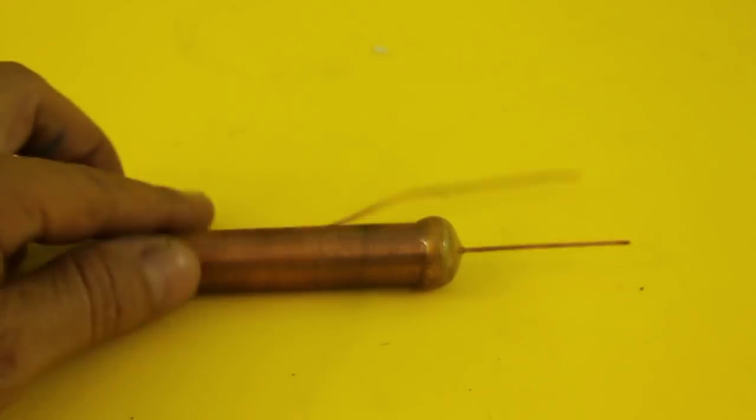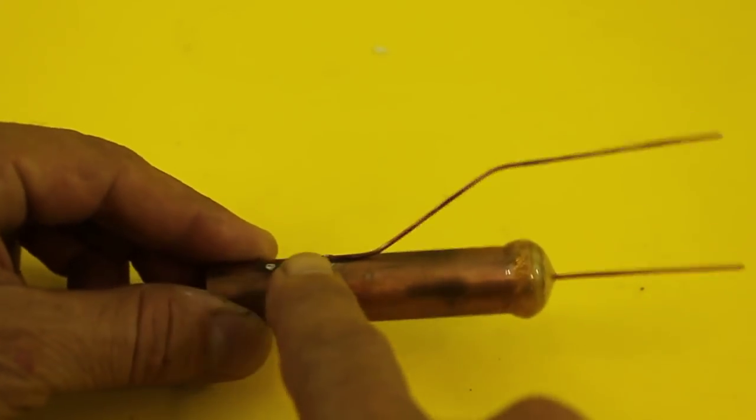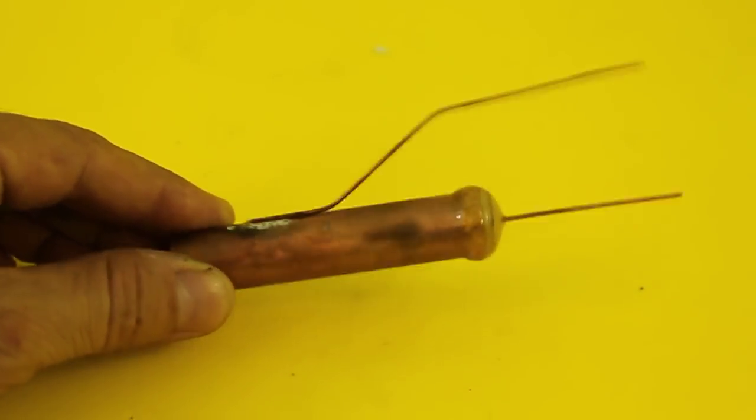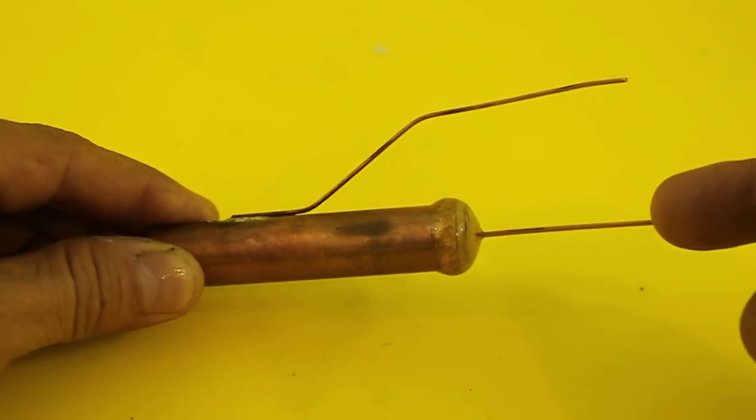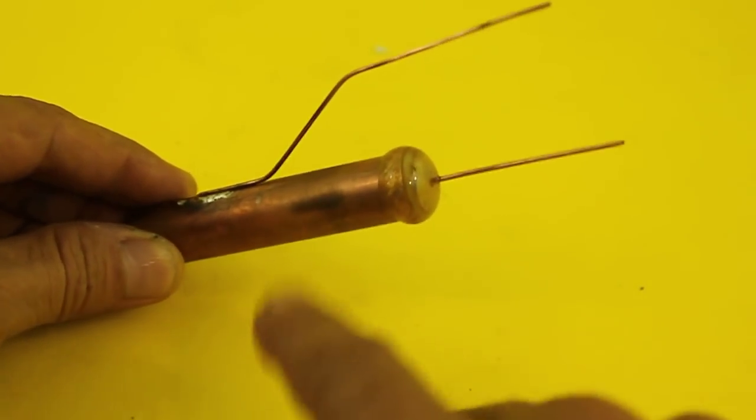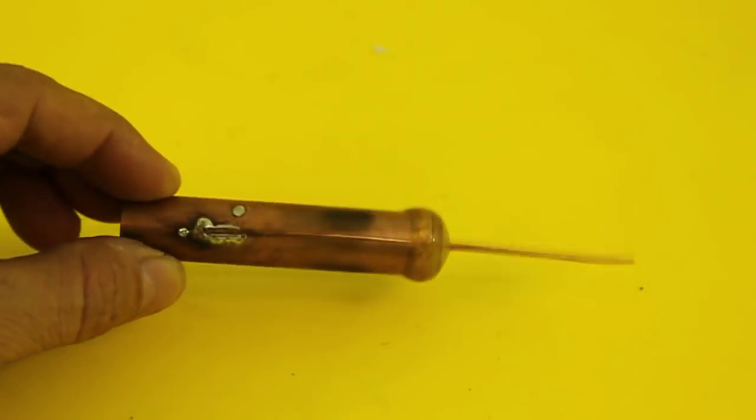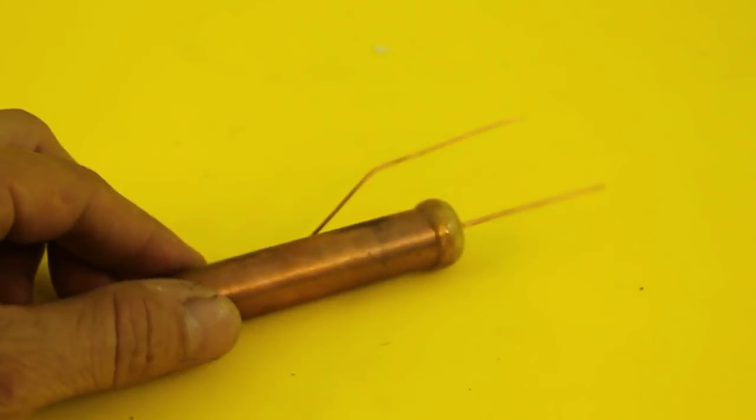Ok, here it is. I soldered another piece of wire to the copper tube. So we now have the two electrodes and I added more epoxy here to secure the wood dowel. Now let's make the connections and test it.